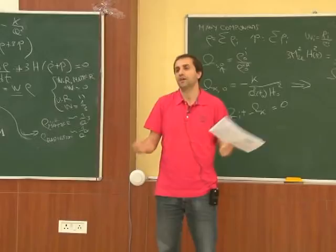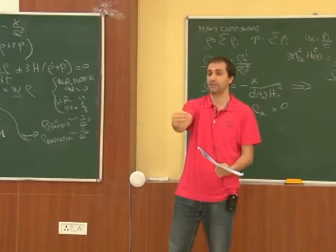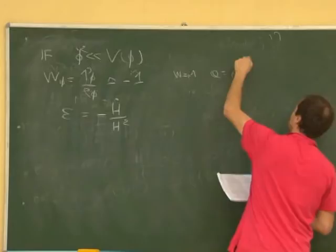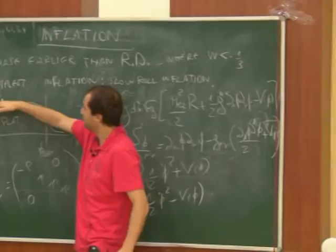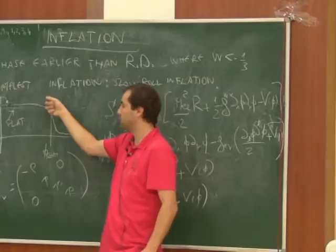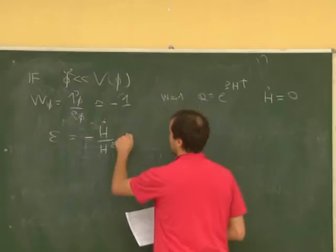This will motivate the introduction of inflation, which does the following: it takes a random generic initial state and ends up in this peculiar state from which the standard matter-dominated universe evolves. So it makes the peculiar state that we seem to have at the beginning just an attractor of the inflationary dynamics.